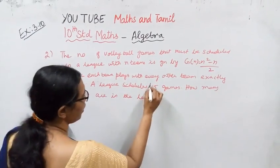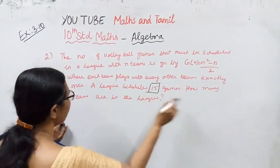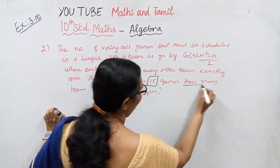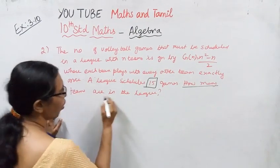A league scheduled 15 games. How many teams are there in the league?